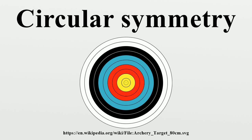Reflective circular symmetry is isomorphic with the orthogonal group O. A two-dimensional object with circular symmetry would consist of concentric circles and annular domains. Rotational circular symmetry has all cyclic symmetry, Zn, as subgroup symmetries.